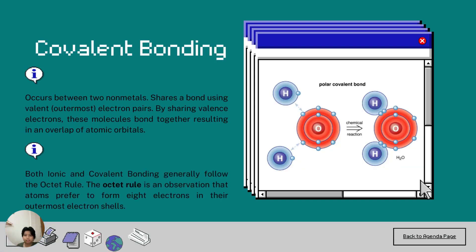Next is covalent bonding. Between two non-metals, it occurs, uses valence or outermost electron pairs to form a connection. These molecules join together, sharing valence electrons, which causes an overlap of atomic orbitals.